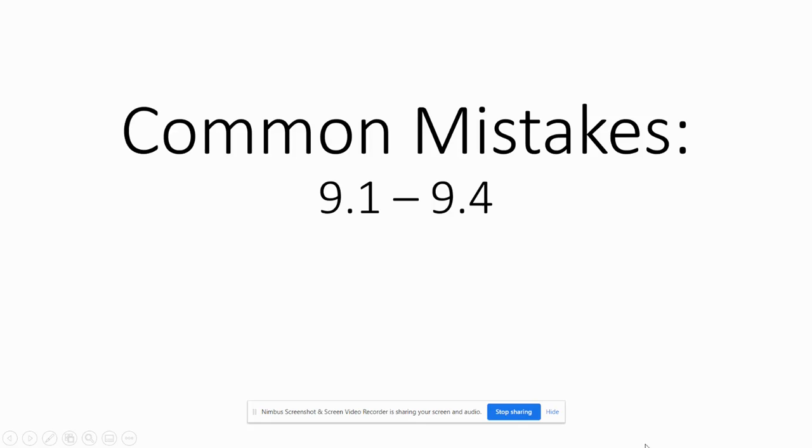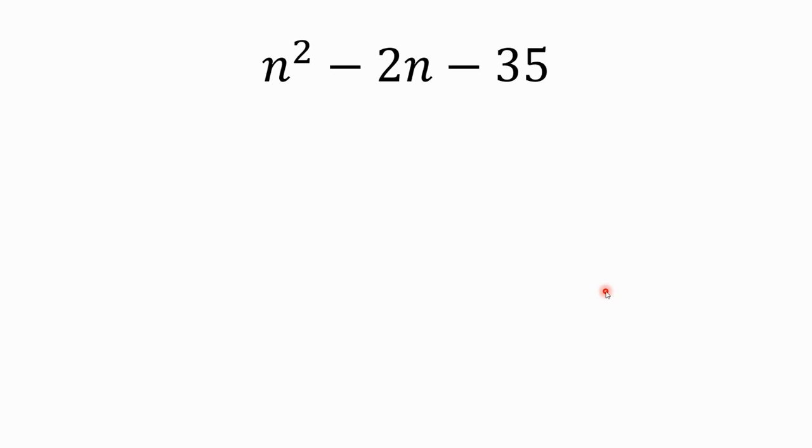Hey guys, we're going to go over some common mistakes that people make from the last two sections, but it's a combination of the last four. The big thing I see a lot is when we get problems that look like this. A lot of us remember that we need to look at this last number and make sure they multiply to give us negative 35.